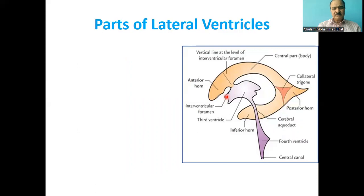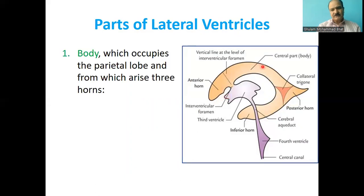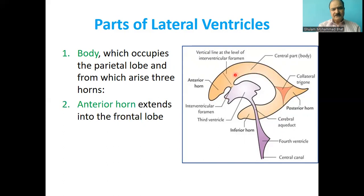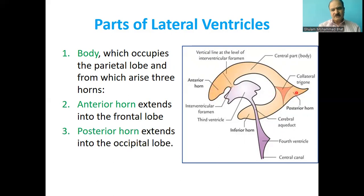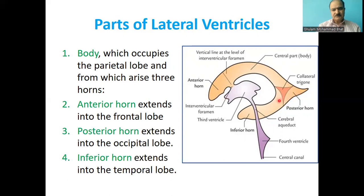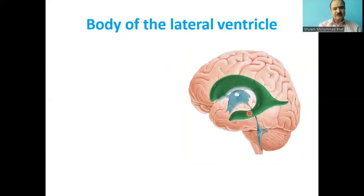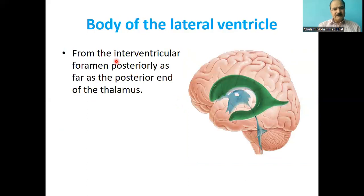Each lateral ventricle has a body, which is present in the parietal lobe of the cerebrum. The anterior horn extends into the frontal lobe, the posterior horn goes into the occipital lobe, and the inferior horn goes into the temporal lobe. The body extends from the interventricular foramen posteriorly as far as the posterior end of the thalamus.